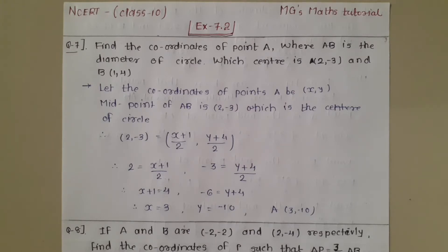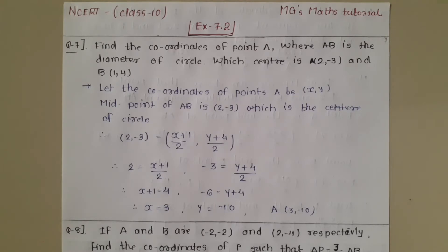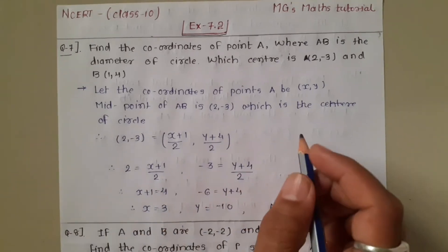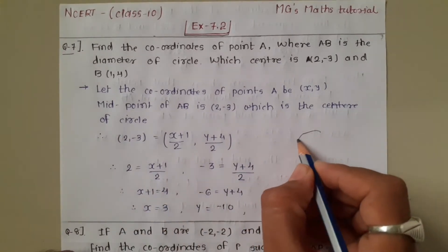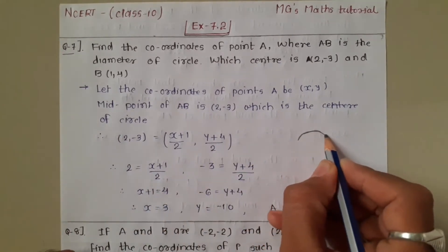Exercise 7.2, question number 7: Find the coordinates of point A, where AB is the diameter of the circle, whose center is (2, -3) and the coordinate of B is (1, 4).